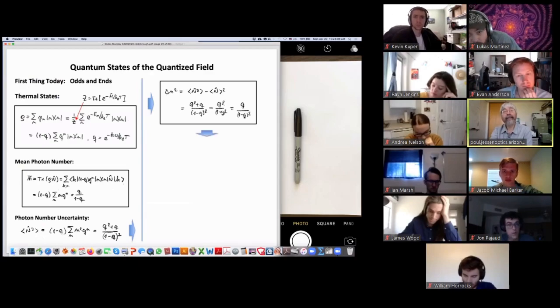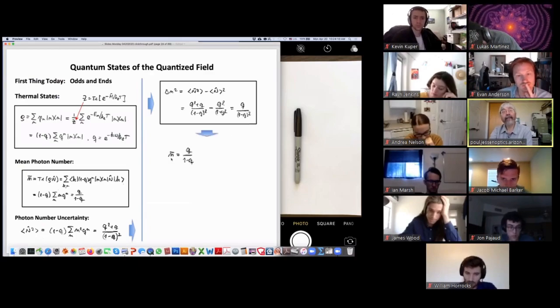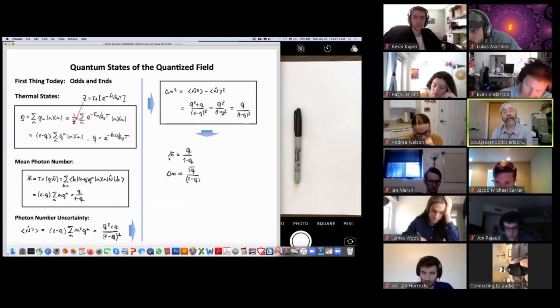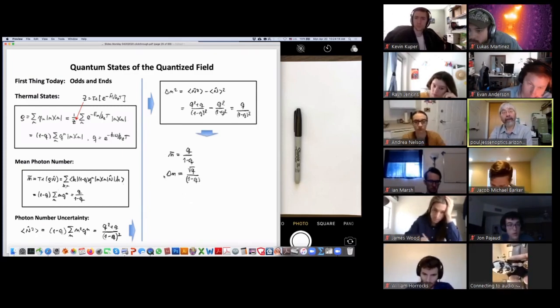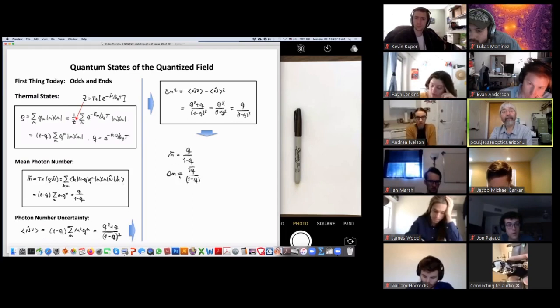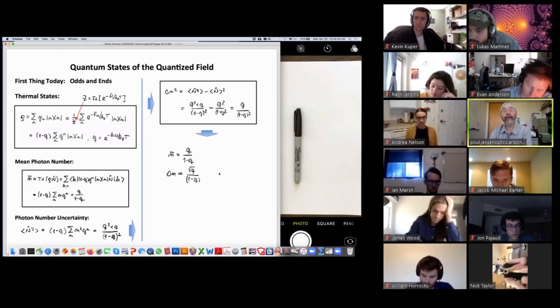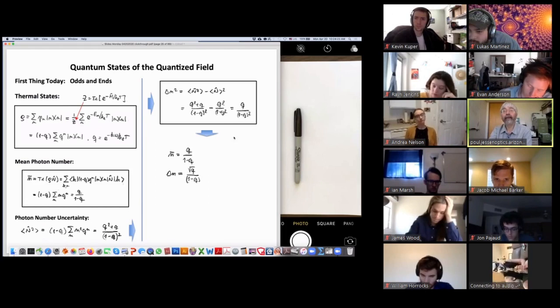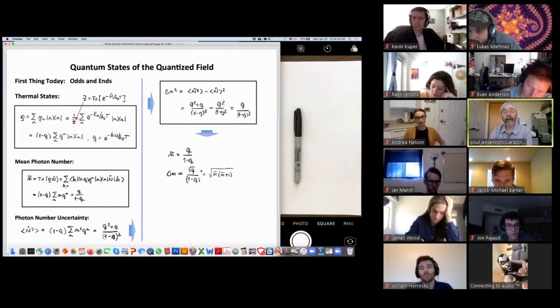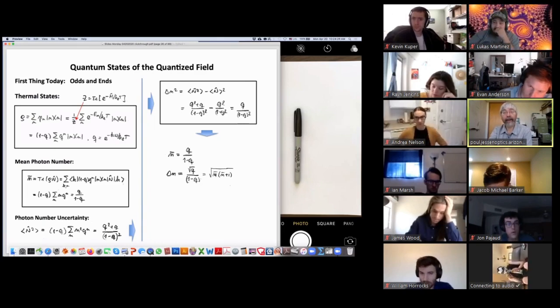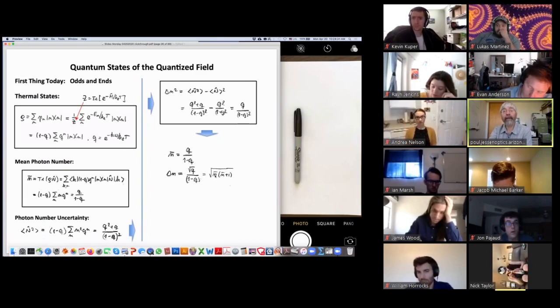So that's just a little math. Here we have again n bar, the mean photon number, the root mean square, the variation, the standard deviation of the photon number distribution, square root of this, so square root of q over 1 minus q, which we can write as this quantity here, we can write as the square root of the mean number.